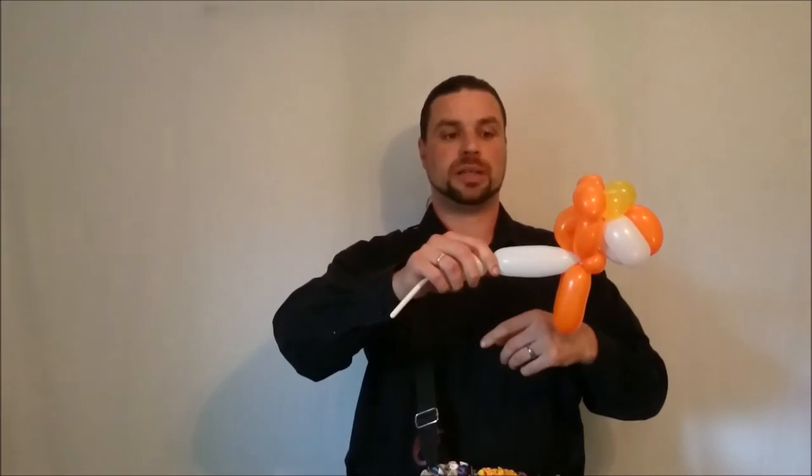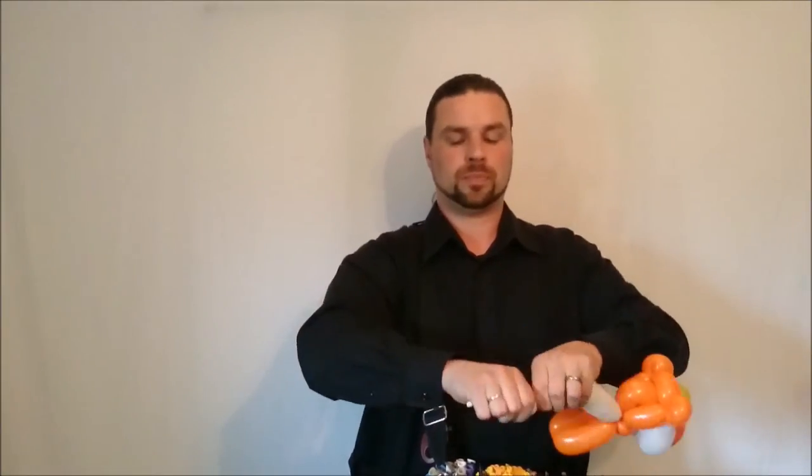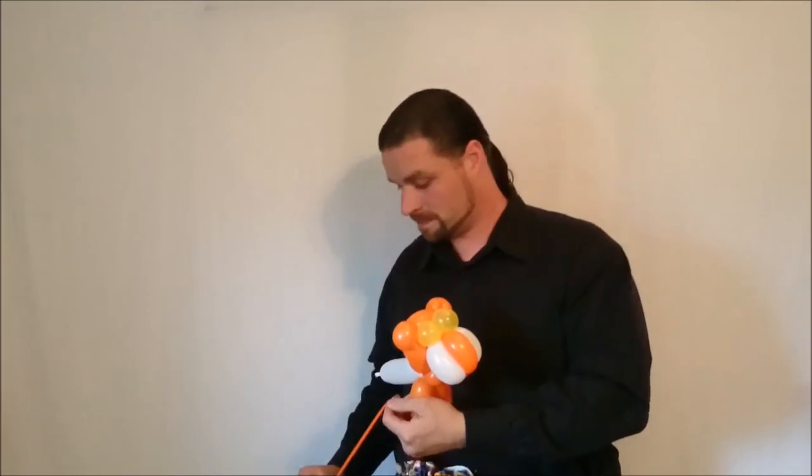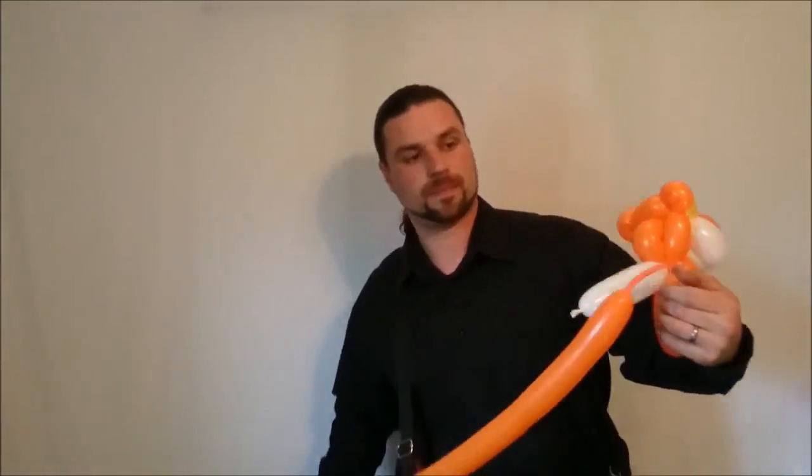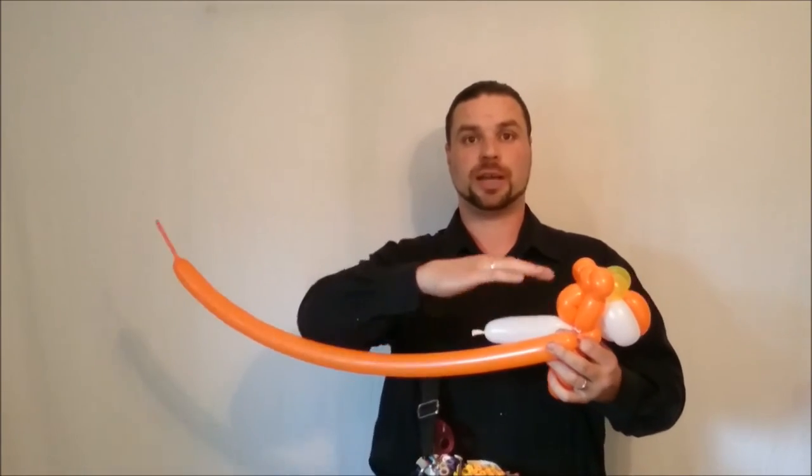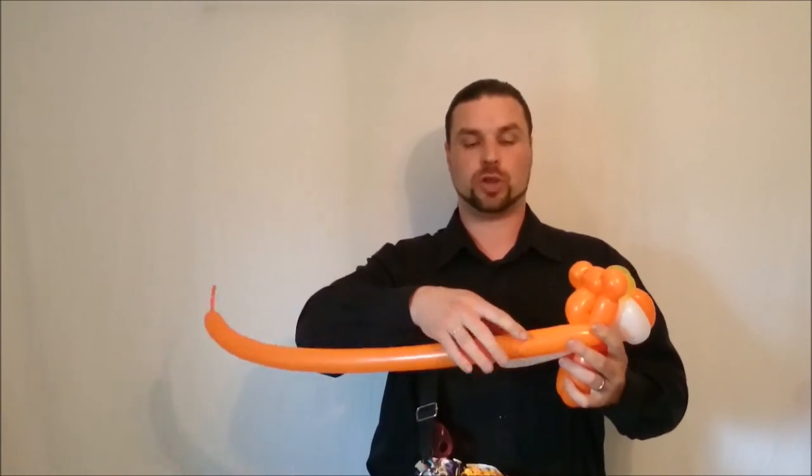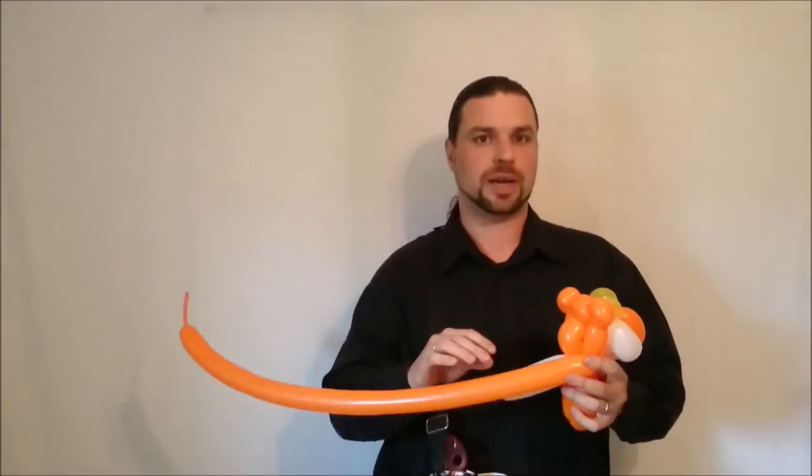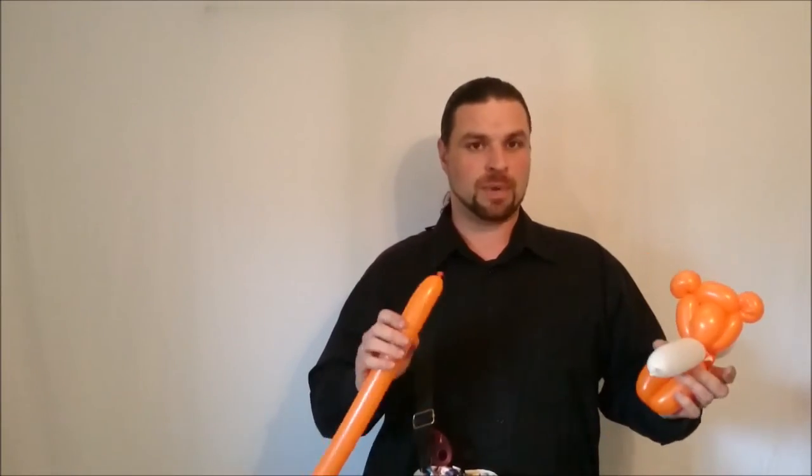Now we're going to make the body and attach it here. This is where you can take the leftover white, lock it into here. Make it however long you want the body to be. I like it not too long. Grab another orange for the body. Now this is where you can decide how you want to make it. You can have three bubbles of three layers of orange here, one on each side and one on top, or you can make it with just two. It depends on how big you want the body of the tiger to be.